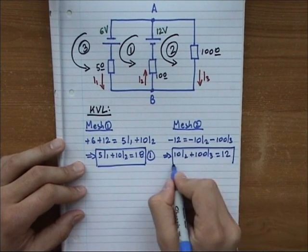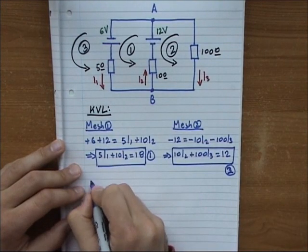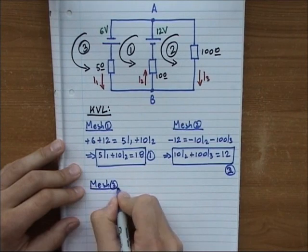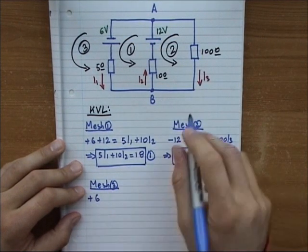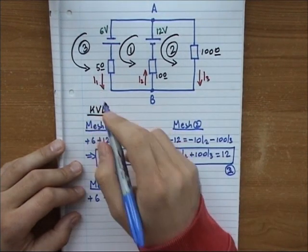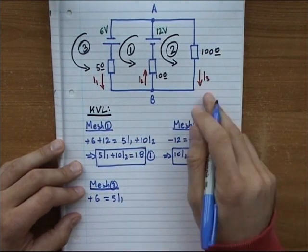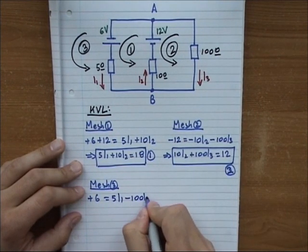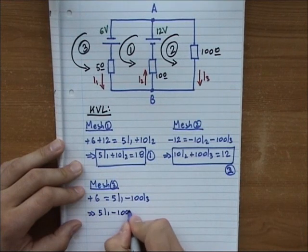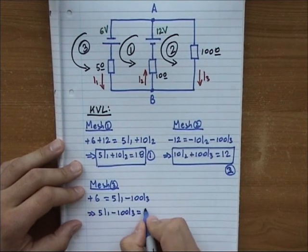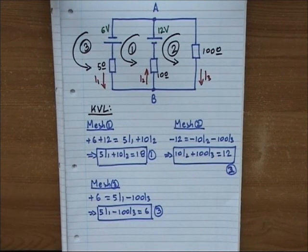Now for the external mesh, mesh three. Beginning again from A: positive 6, and I don't have any other sources. This equals 5I1 running through B, and then going through this branch it's negative 100I3. So equation three is: 5I1 - 100I3 = 6 volts.